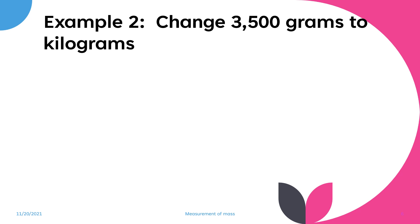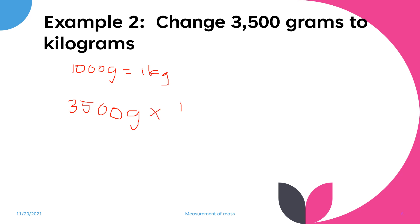Example 2: Change 3,500 grams to kilograms — this is just the reverse of the previous problem. We know 1,000 grams equals 1 kilogram, so we have 3,500 grams times 1 kilogram over 1,000 grams. The gram units cancel, and 3,500 divided by 1,000 equals 3.5 kilograms.